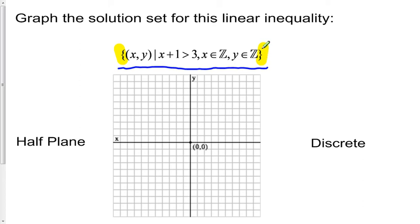Here we have our ordered pair, so this is all ordered pairs (x,y), such that—that's what that line means—such that x+1 is greater than 3. Now here we have something interesting happening right here.